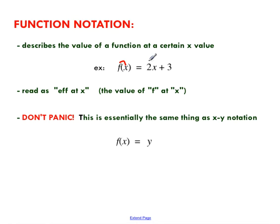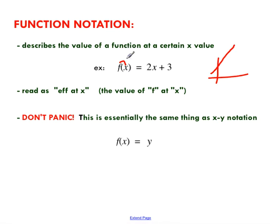This would be our function here. If you were to graph this, it's just a straight line with a slope of two passing through three. If you just check quickly, that definitely passes the vertical line test, so this would be a function. Just get used to using f at x, but don't panic — it's essentially the exact same thing as x, y notation.